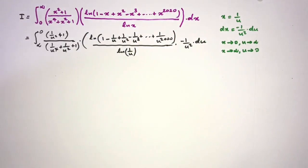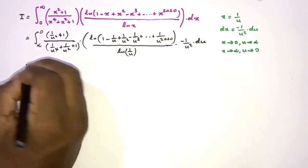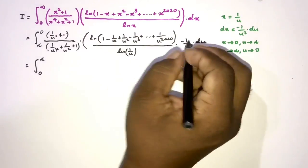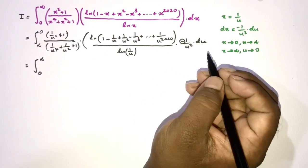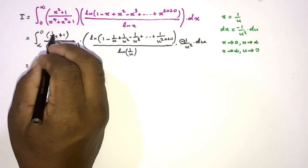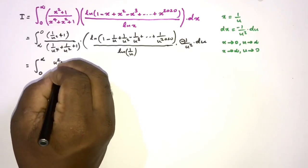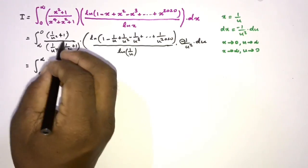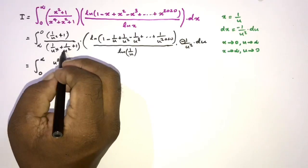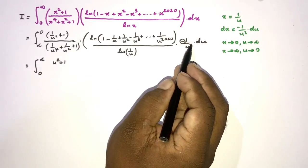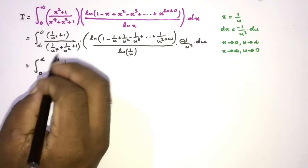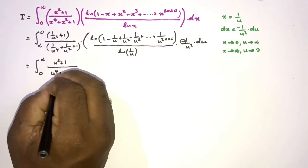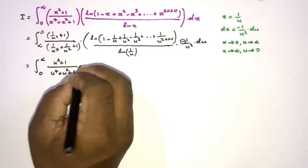Now let's simplify. The minus sign allows us to change the boundary from 0 to infinity, and the minus sign gets cancelled. Taking a common denominator, we have u squared plus 1. For the fourth-power term, taking the common denominator shows that u to the fourth power and u squared terms cancel, leaving u to the fourth power plus u squared plus 1.